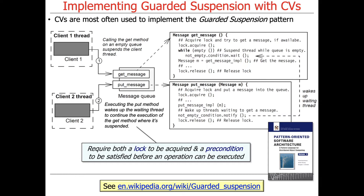Condition variables are very commonly used to implement something called the guarded suspension pattern. You can read about this pattern online or in the Pattern-Oriented Software Architecture Volume 4 book. Basically, in a nutshell, what this pattern says is: in order to execute an operation, you need both a lock to be acquired, like a reentrant lock, and a precondition to be satisfied. Until both of those things are true, you can't make any progress. That's why it's called guarded suspension — you suspend yourself until things go the way you want.